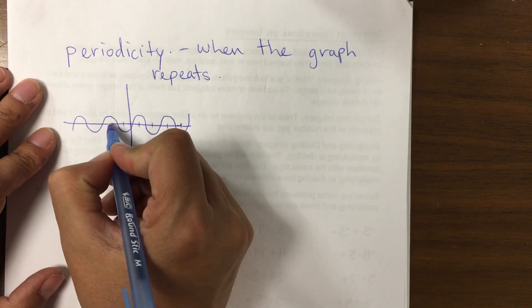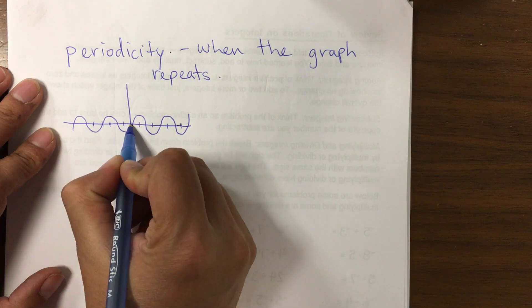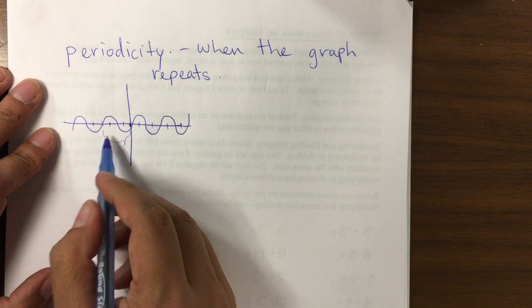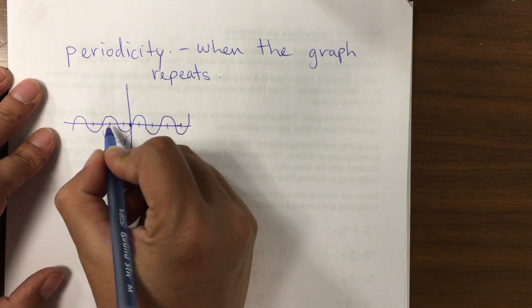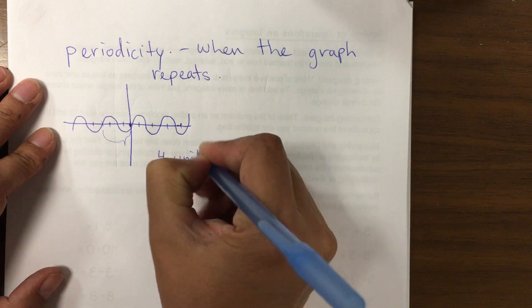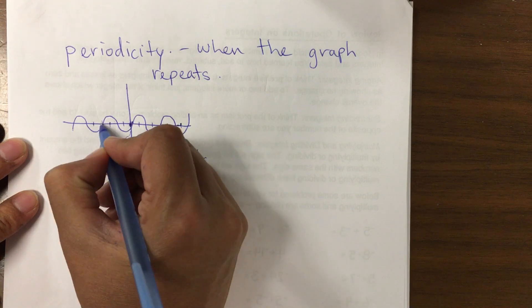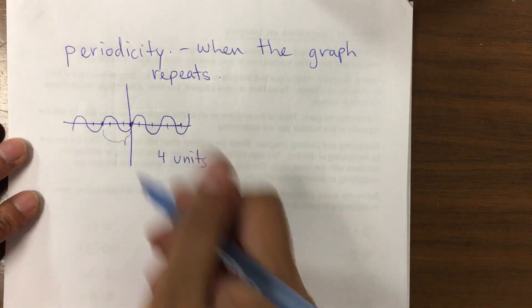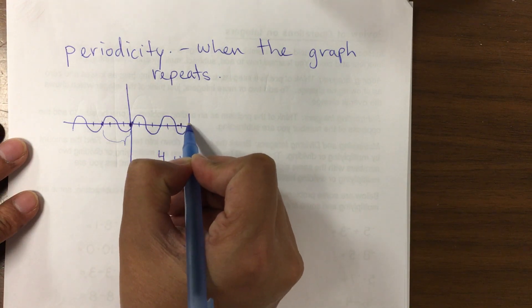You can also measure to see how often it repeats. If we have something like this, we can see that it goes like this and then it does the same thing again. So how many units does it take to repeat? It goes up and then down, up and then down, and up again. So it takes 4 units.